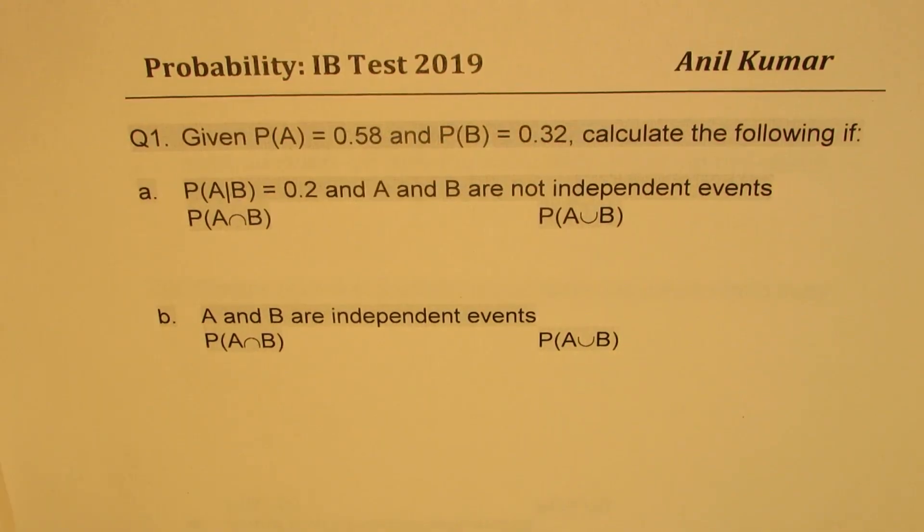Question number one. Given probability of A equals 0.58 and probability of B equals 0.32, calculate the following.